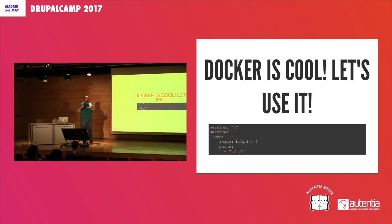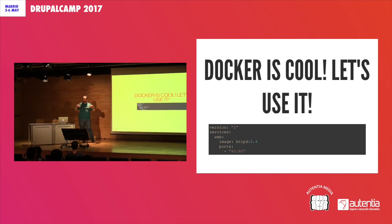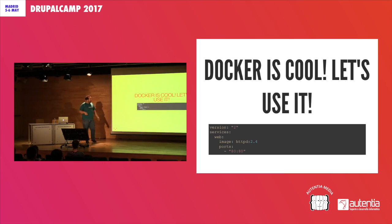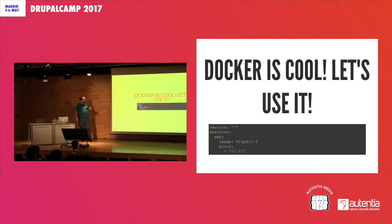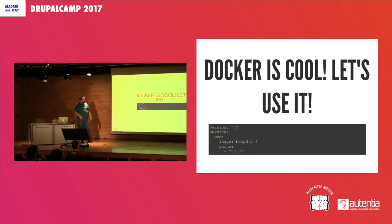I guess that everyone faces this moment where someone says, hey, Docker is cool, let's use it, let's use all of us the same environment, so we have the same result as production. Then I started with a really small Docker Compose file that will just download an image of a Docker container that will use Apache and it will use port 80.